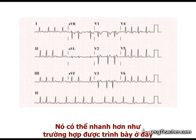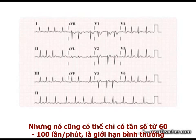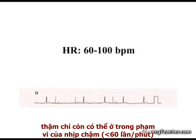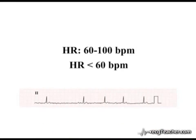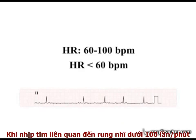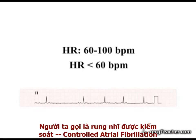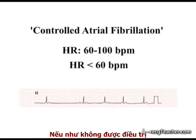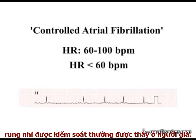It may be much more rapid than shown here; however, it may occur at a rate within the normal range, or even be slow enough to qualify as a bradycardia. When the heart rate associated with atrial fibrillation is less than 100 beats per minute, it is described as controlled atrial fibrillation. In the absence of treatment, controlled atrial fibrillation is often observed in elderly patients.